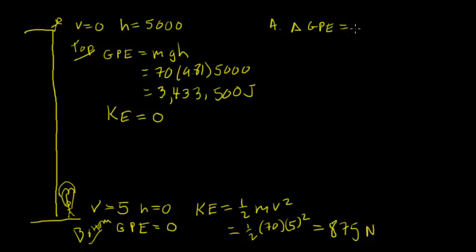Well, gravitational potential energy decreased by about 3.5 million joules, so I'm going to give this a negative sign: negative 3,433,500 joules.